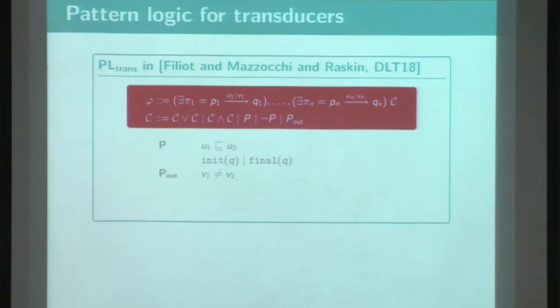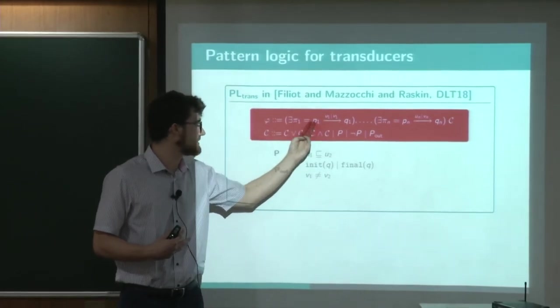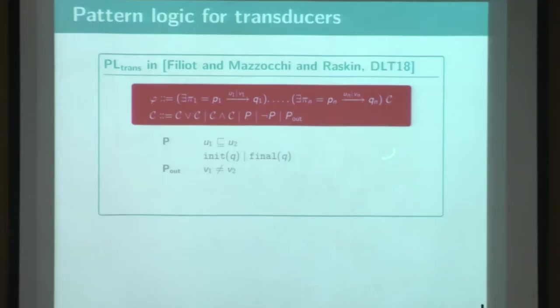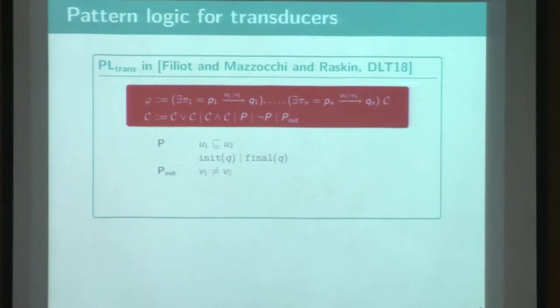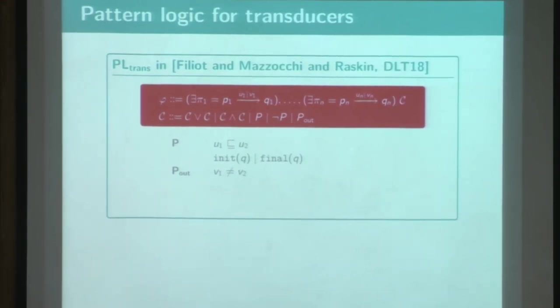but we can do even better thanks to the pattern logic. The pattern logic is a formalism in which we can express some structural properties for automata with output and in particular for transducers. So here is the definition. Please focus on the red box. So such a formula starts with some list of quantifiers and those quantifiers set that there exists some paths which start from some state to another one,